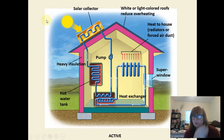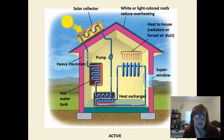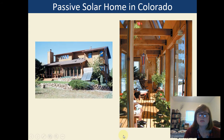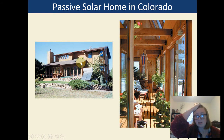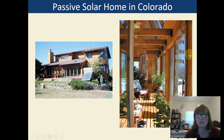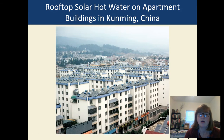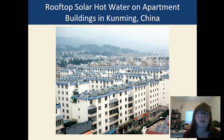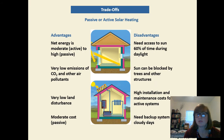Active solar is what you're probably thinking of when you think solar power — solar panels on a house that collect sunlight energy and use machines to turn that into electricity or heat. For example, in Colorado some homes get a lot of direct sunlight and can be very warm inside even in cold weather because of how the sunlight is let in and heat is trapped. Here are some active solar panels on top of buildings in China, where they're trying to use less non-renewables and switch to solar.